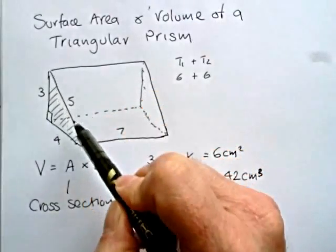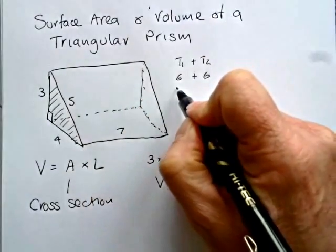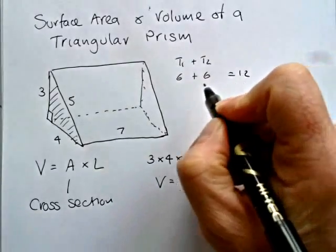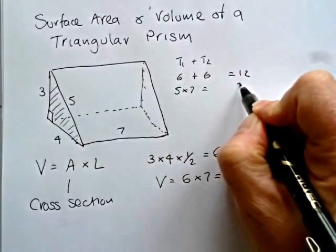Now you've got a rectangular surface at the front. That's 5 times 7. So we'll put that there. So the rectangular at the front is 5 times 7, which equals 35.